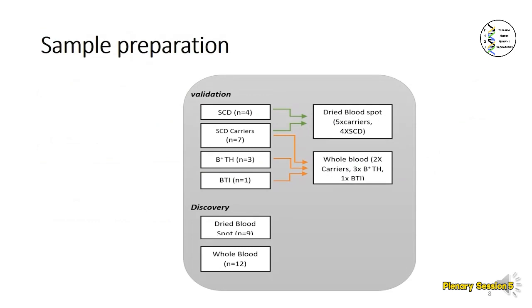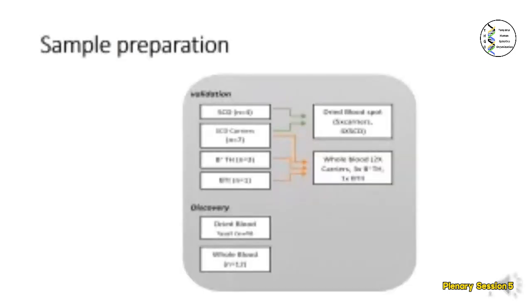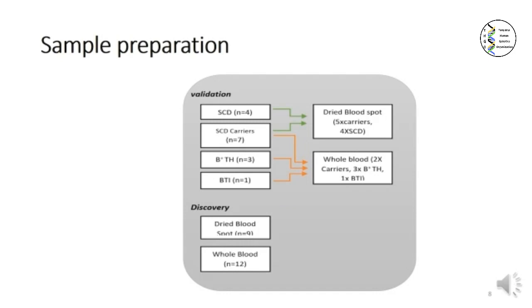We grouped our samples into two cohorts: the validation cohort and the discovery cohort. In the validation cohort, we involved 15 samples — five were dried blood spot samples from newborns, and six were whole blood samples from adults attending the sickle cell disease clinic. These samples from the validation cohort were previously sequenced by Sanger sequencing to confirm beta-thalassemia and also to confirm claims from sickle cell disease carrier patients who reported symptoms consistent with active sickle cell disease. In the discovery cohort, we involved 21 samples: nine were dried blood spot samples from newborns, and 12 were whole blood samples from adults. These samples had not been previously sequenced by any sequencing method.